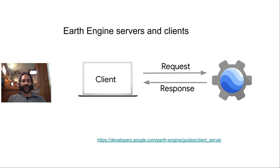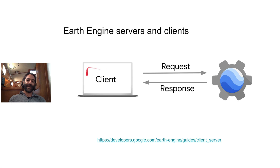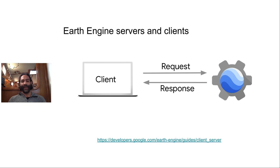It's important to note that those EE objects are just handles for objects on the server. When you write code in one of the client libraries, it turns that code into a JSON request object, which is then sent to Google Earth Engine for processing. On the server, the data you've asked for is loaded and the computation is performed, and then the result is sent back to your client. The response might be a number, a chart, or a display tile. This is a fairly low-bandwidth operation, and that lets you prototype very large operations without relying on your own computer to do all the computation.